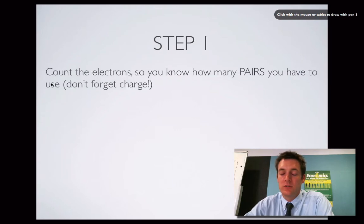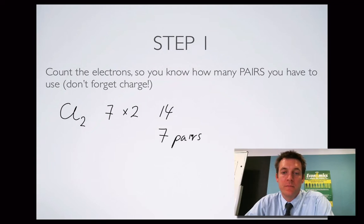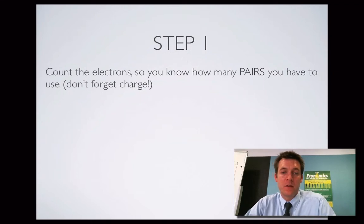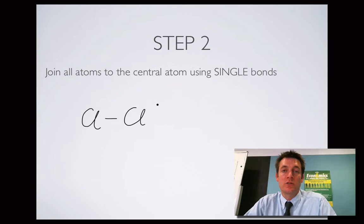Step one is count the electrons. We need to know what group our atoms are in. Chlorine is in group seven so it has seven electrons. We've got Cl₂, so two times seven electrons gives 14, and that's seven pairs. Now step two: join all the atoms to the central atom using single bonds. There isn't really a central atom in the chlorine molecule because it's just two chlorine atoms, so we join them like so.